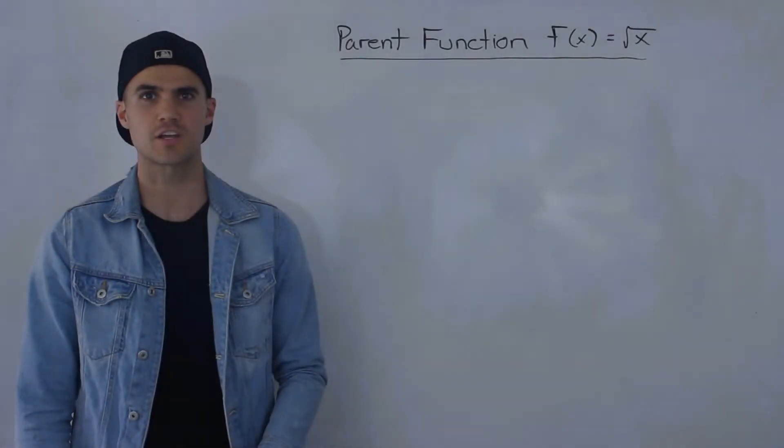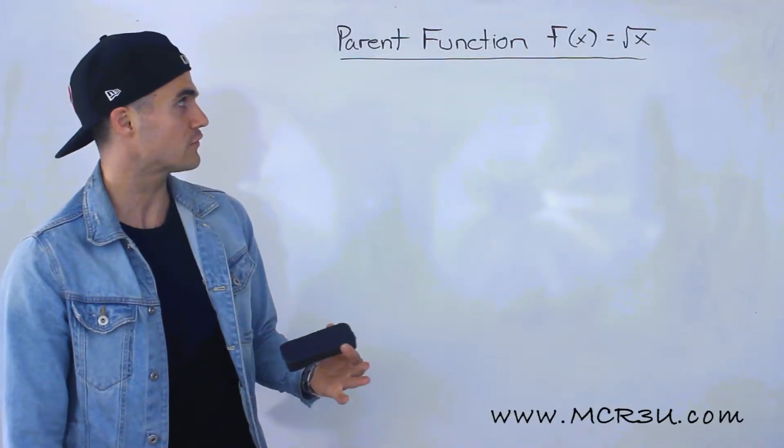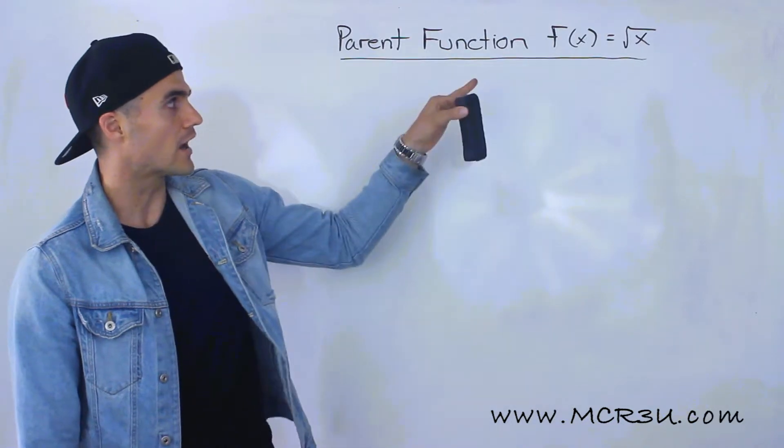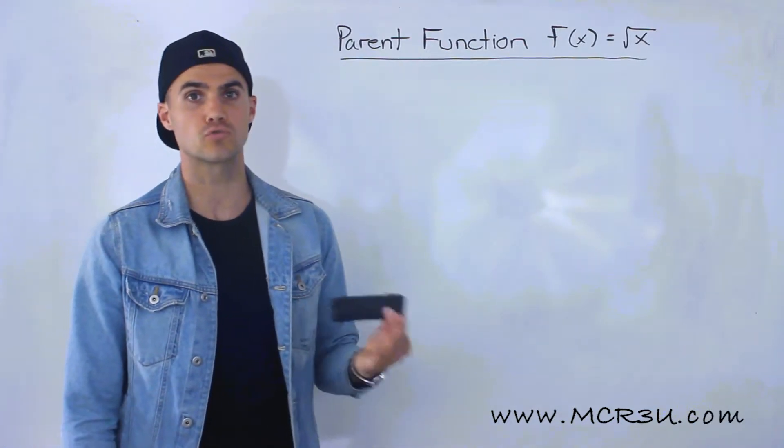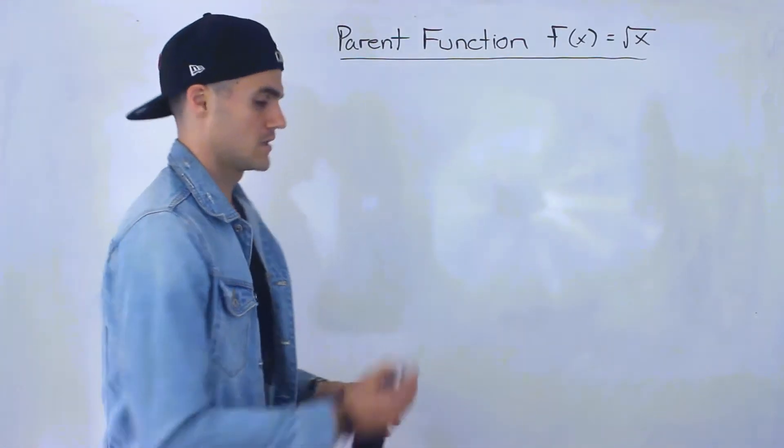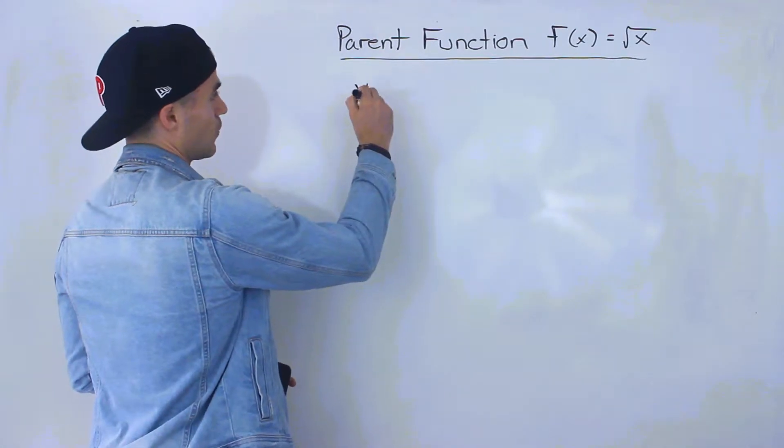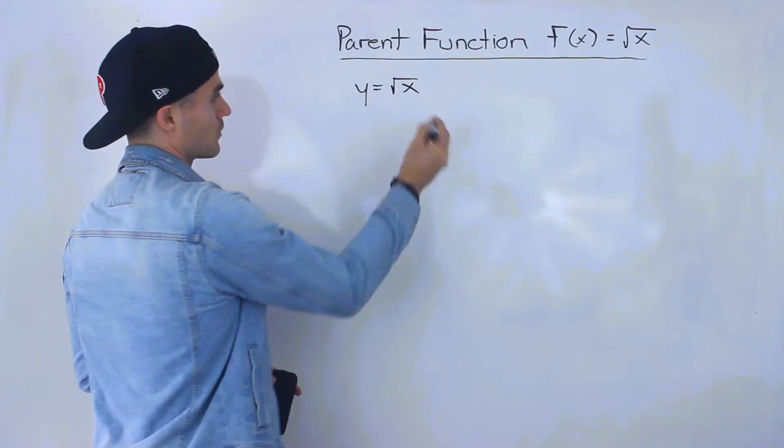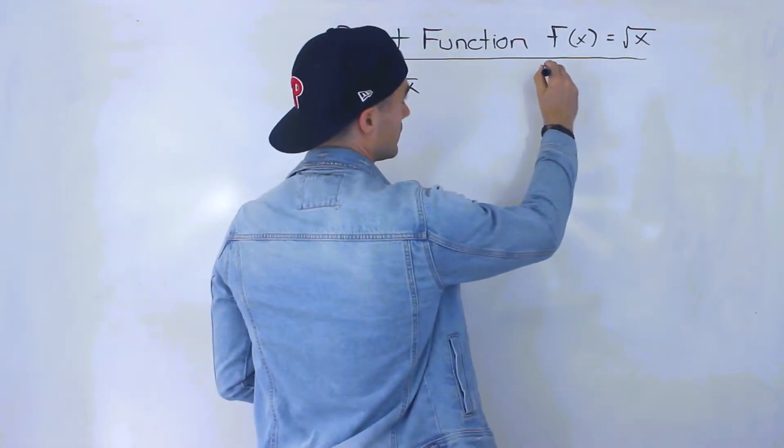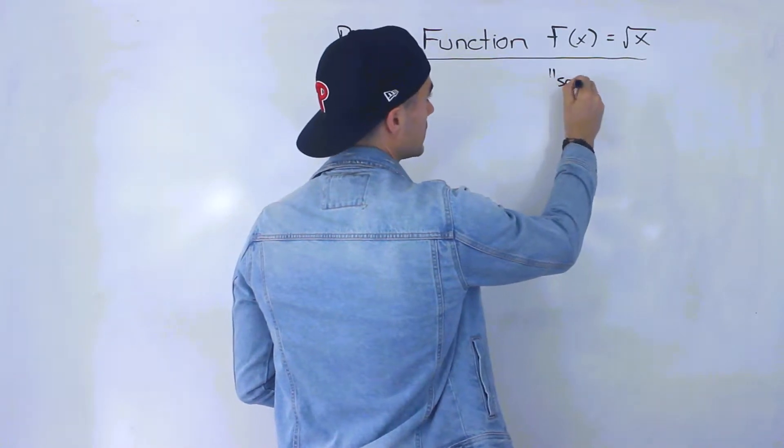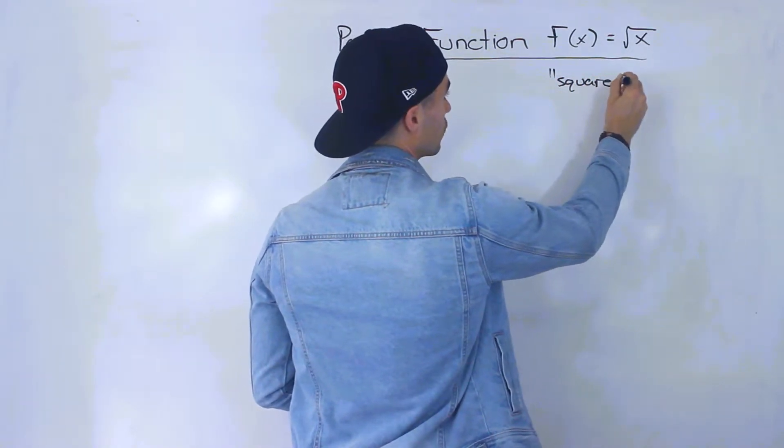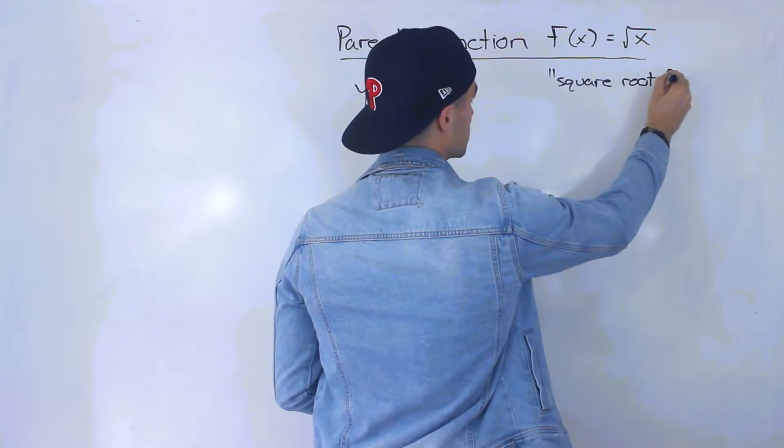Yo what's up guys, welcome back. Patrick here. Moving on to the next parent function that we're going to discuss, we got f of x equals the square root of x. So this is basically y equals the square root of x. Sometimes this is called the radical function or the square root function.